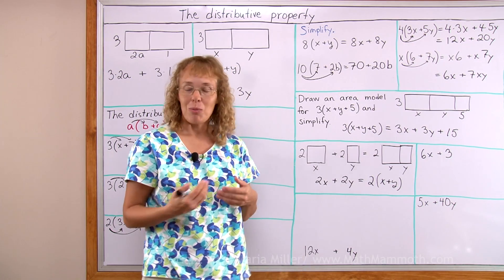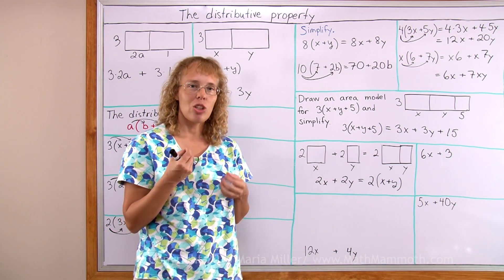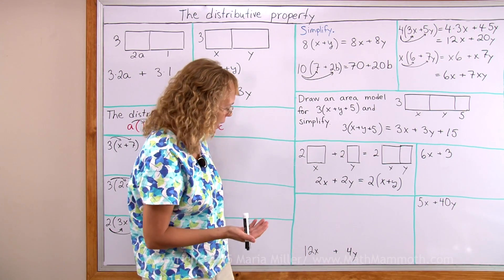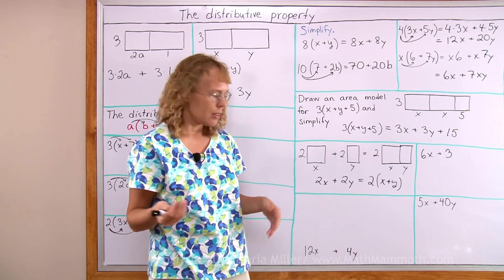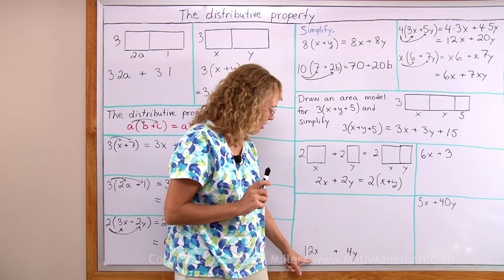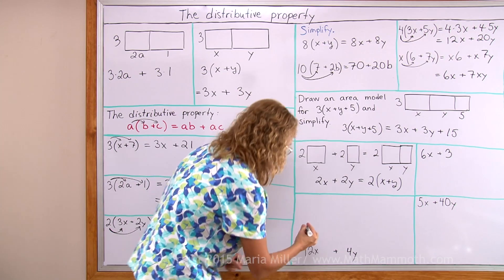For that, I need to find a common factor. I need to find a common number in this and this multiplication. But there doesn't seem to be any. 12, 4, different numbers. x, y. But there is if I write 12 as 4 times 3.